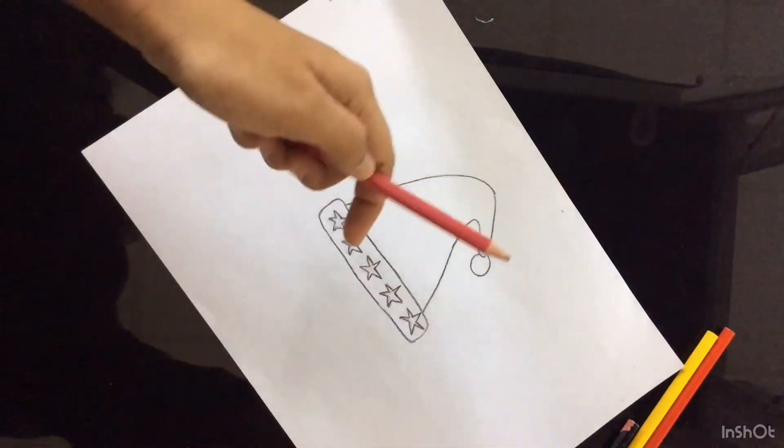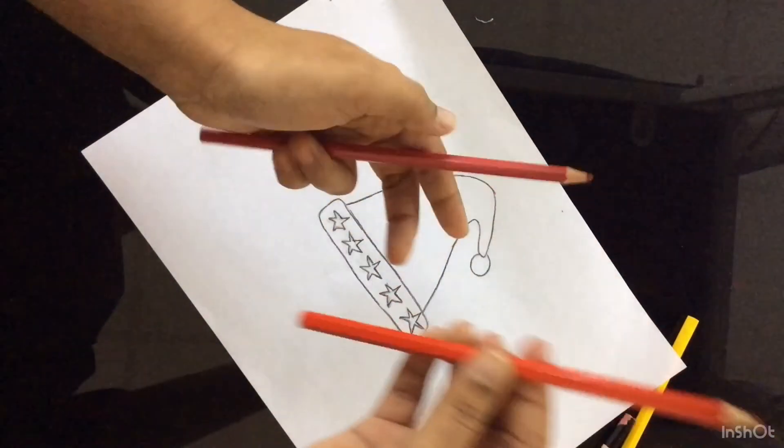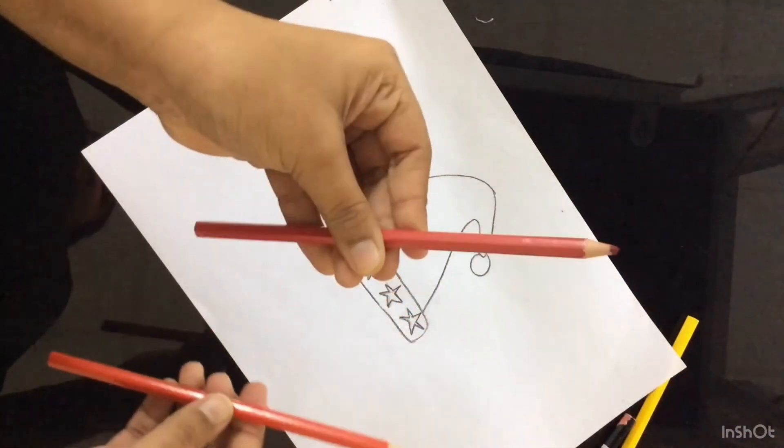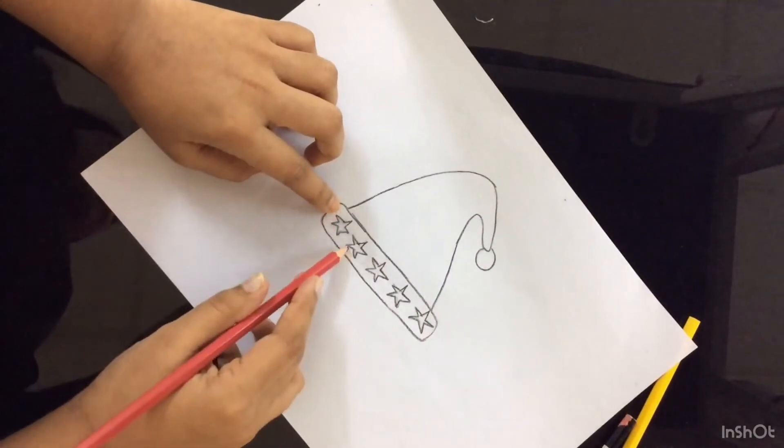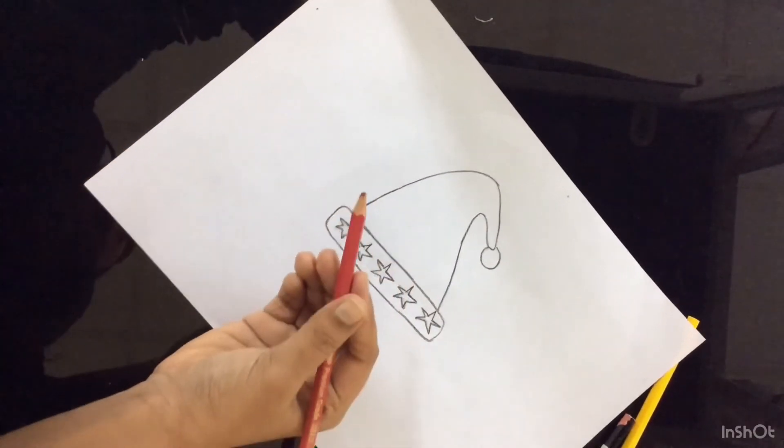I have two kinds of red. This is a little bit light and this is a little bit dark. So for down I'm going to give it the dark color pencil.